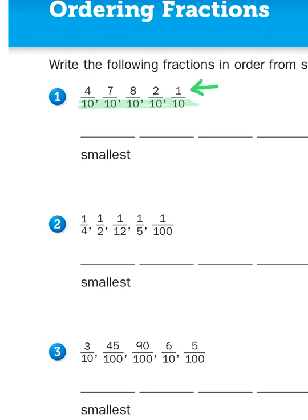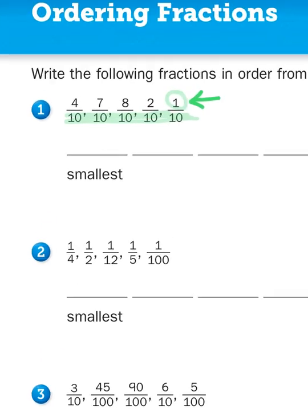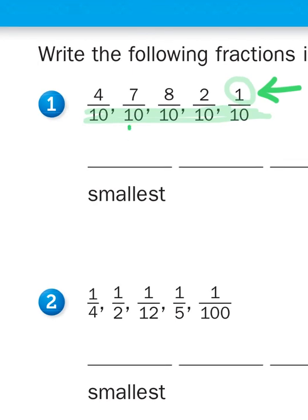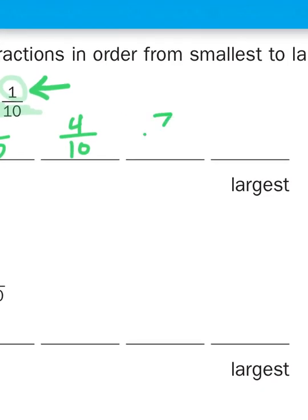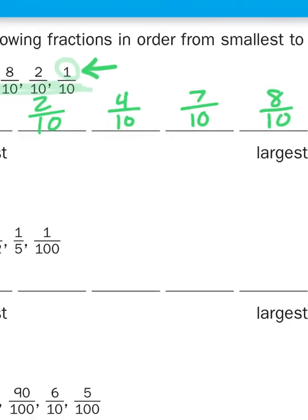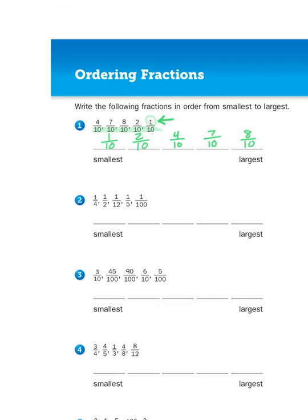If I'm going to order them from smallest to largest, I need to find the smallest number, which you and I both know is 1. So then I would write the fraction 1 tenth first, followed by 2 tenths. And since 3 tenths is not represented here, I would go to the next largest fraction, that's 4 tenths. Then 5, 6, 7 tenths, 8 tenths, and then I'm out of fractions. So, I have now ordered them from smallest to largest.